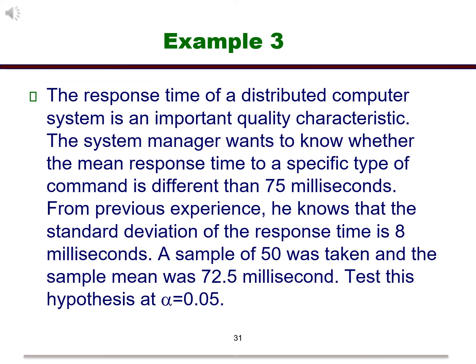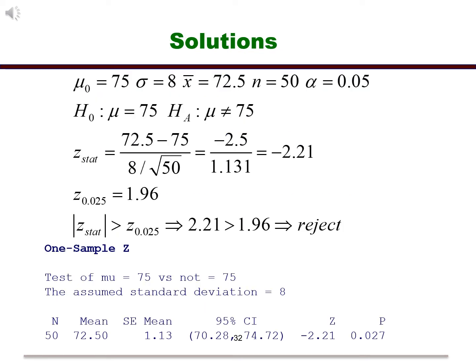Here is an example dealing with the response time of a computer system. Since we wish to know if the mean is different from some value, the alternative here will be not equal to. Also, we are given the value for sigma and the sample size is greater than 30. So we can use the z test. Here are the solutions. Notice that I have presented the output done by hand and also by Minitab. We calculate the z statistic and compare it to the critical point. Since the absolute value of the z statistic is greater than the critical point, we reject the null. We also see this from the Minitab output. The p-value is 0.027, which is less than 0.05. This will also lead us to a decision to reject.